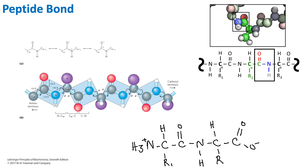Whenever we have amino acids coming together and forming a bond, that bond is referred to as our peptide bond. The peptide bond is created between the carboxyl end of one amino acid and the amino end of the other amino acid.